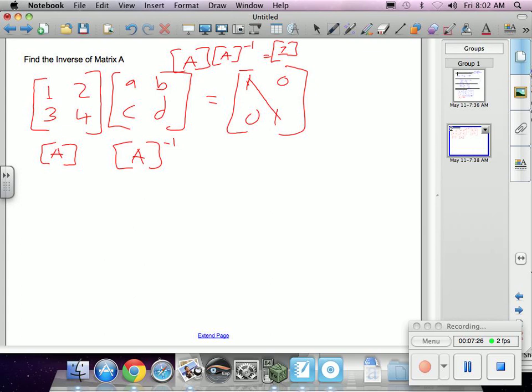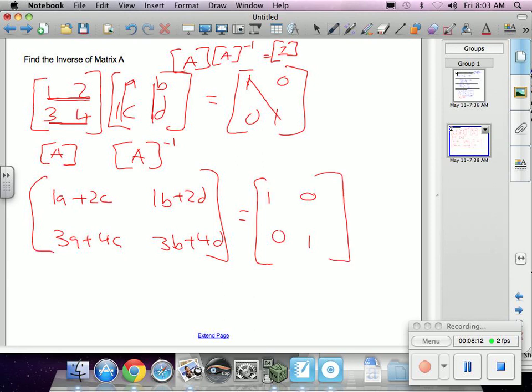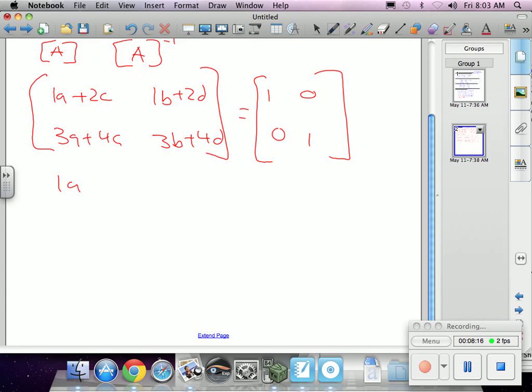And so now I can solve for that inverse matrix by multiplying these two. So I would get, if I was multiplying these two, first I would multiply the first row times the first column, and I get 1a plus 2c. Then I would do the first row by the second column, and I would get 3a plus 4c. And then I would do the second row by the second column, and I would get 3b plus 4d. Now, this is my matrix. And I know that this is what it equals. So all the corresponding entries are going to be equivalent. So I would say 1a plus 2c equals 1. 3a plus 4c equals 0. 1b plus 2d equals 0. 3b plus 4d equals 1.